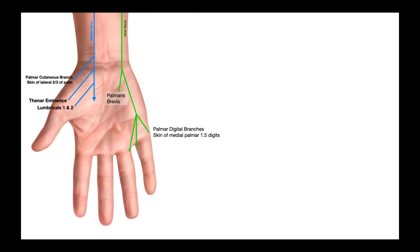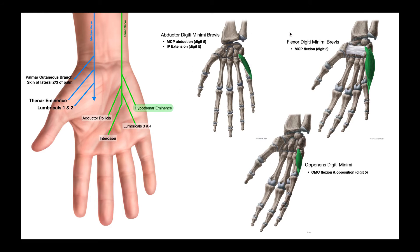Now let's look at the remaining motor branches of the ulnar nerve. The first coming off goes to the hypothenar eminence, innervating the three hypothenar muscles — just like there were three for the thenar eminence. We have abductor digiti minimi, flexor digiti minimi brevis, and opponens digiti minimi. Abductor digiti minimi allows abduction of the fifth digit at the metacarpophalangeal joint and some extension at the proximal interphalangeal joint. Flexor digiti minimi brevis allows flexion of digit five at the metacarpophalangeal joint, and opponens digiti minimi allows flexion and opposition of digit five at the carpometacarpal joint.